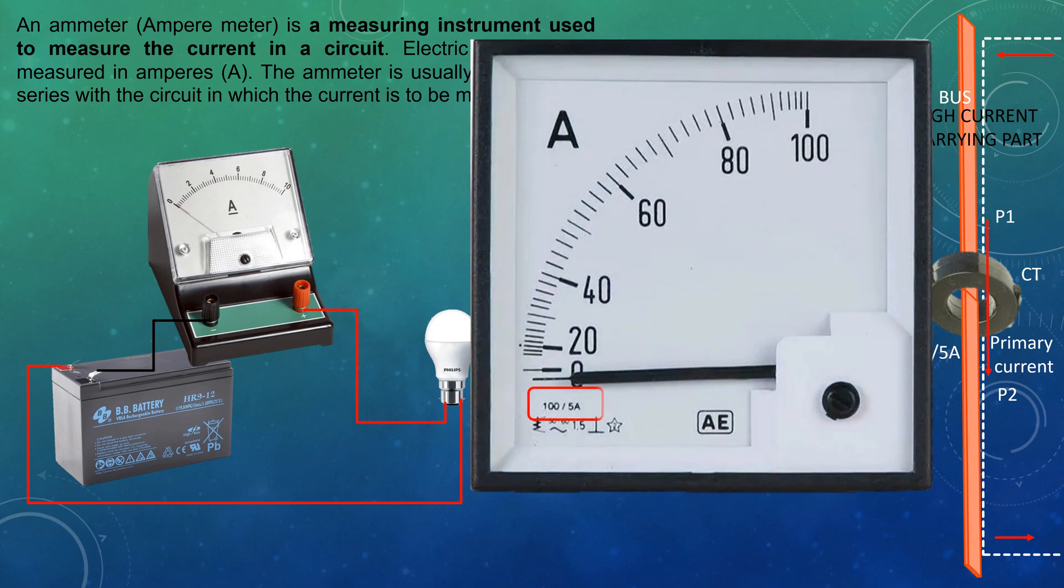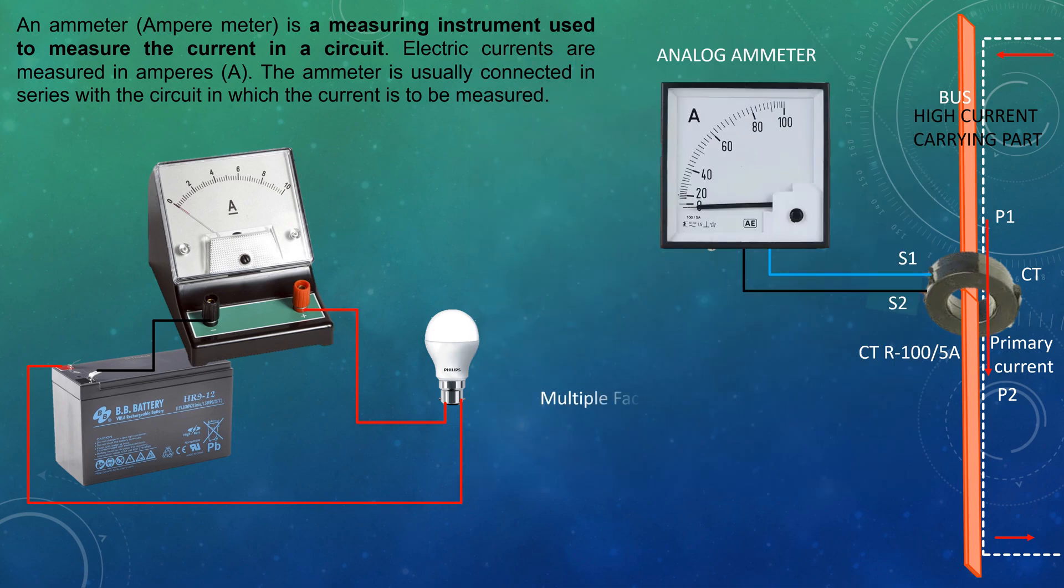Here CT ratio is 100 by 5 ampere. Multiple factor is equal to CT ratio divided by meter CT ratio.